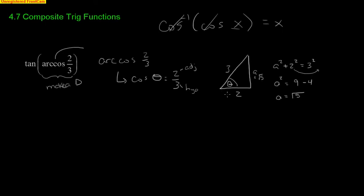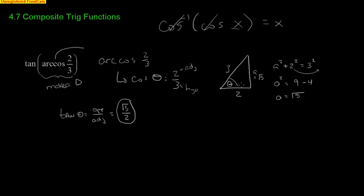Once the triangle is solved using the inside, you go to the outside and apply SOH-CAH-TOA with that function. Tangent of theta is opposite over adjacent, so our final answer is √5 over 2. So we used the inside to set up a triangle, used the Pythagorean theorem to solve for the missing side, and then went to the outside to find our final answer.